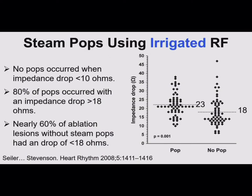From a Bill Stevenson paper on steam pops with irrigated RF: when he kept the impedance drop to less than 10 ohms, they never had a steam pop. Over 18 ohms, about 80% steam pop rate. So I try to keep it for the ventricle 10 to 12 ohms. If you're getting a big drop hitting 18 to 20 ohms, that's where you come off or start backing off on the power. Usually start at 25 to 30 watts and ramp up while keeping an eye on the impedance.